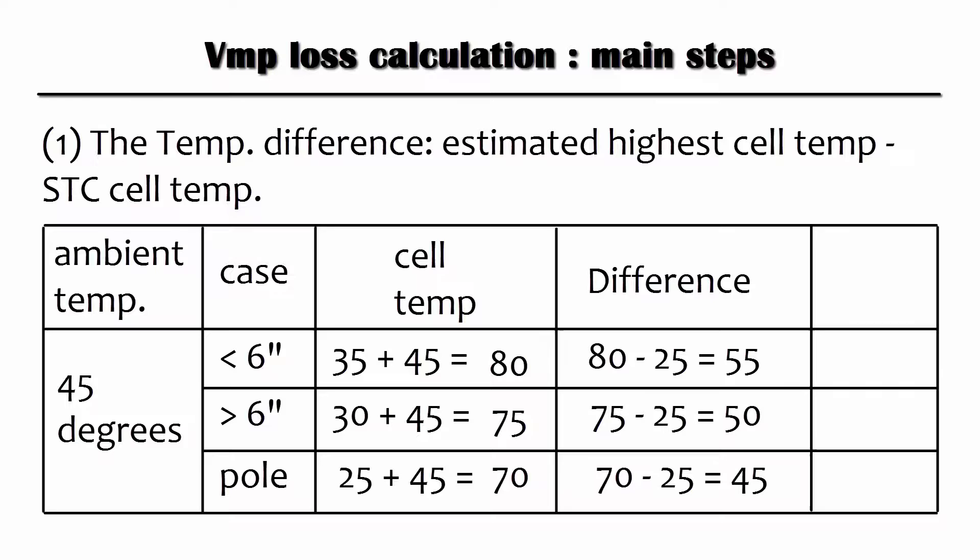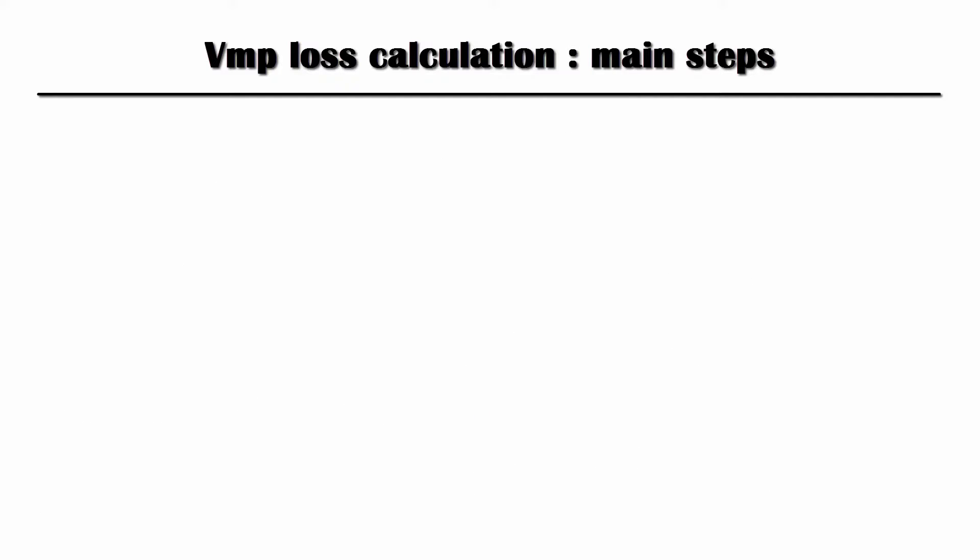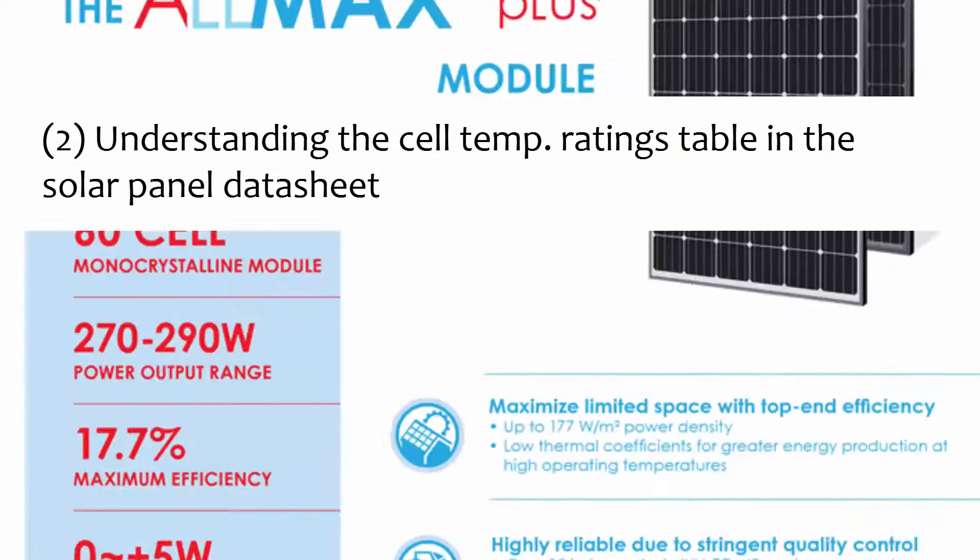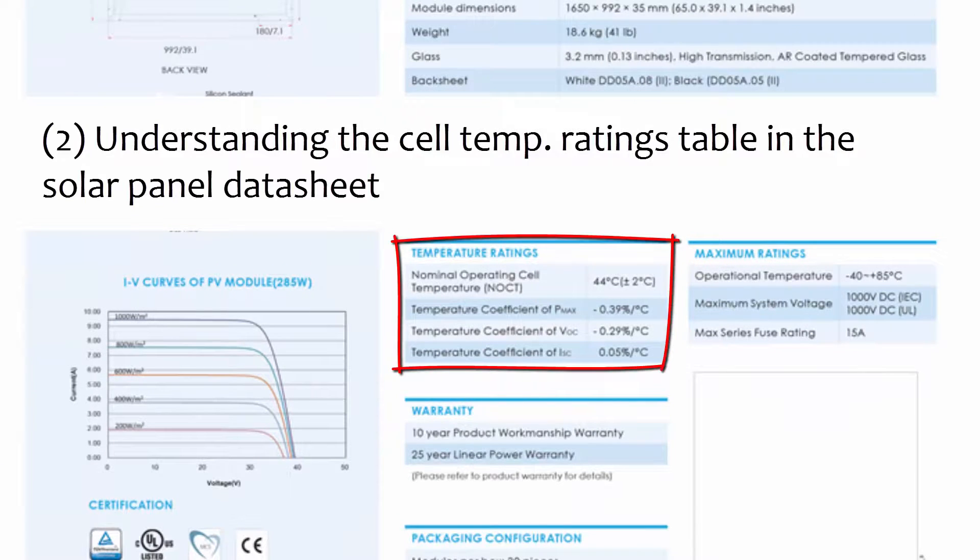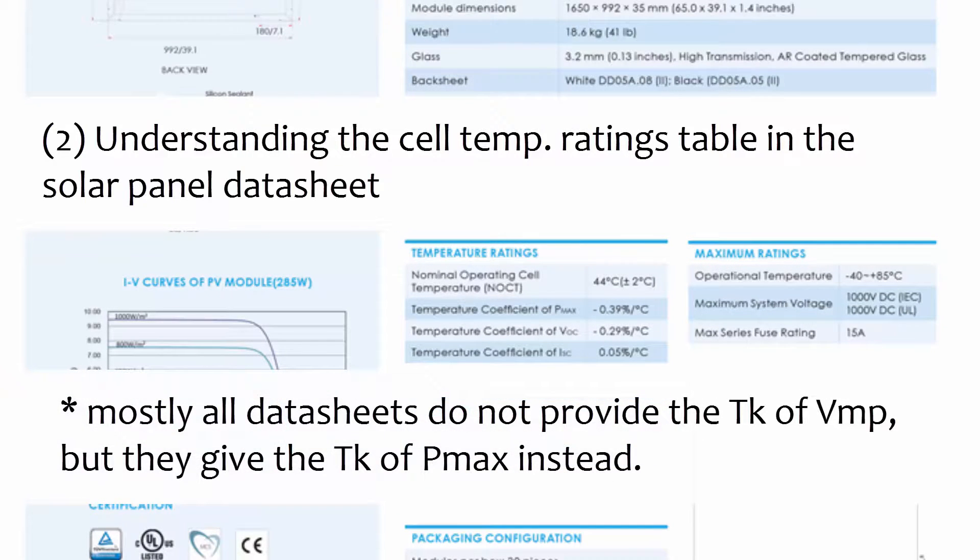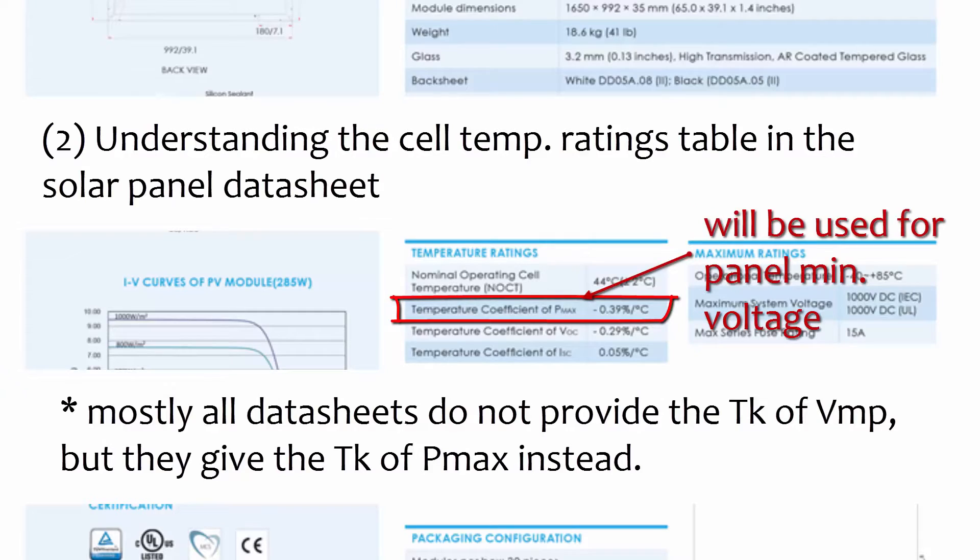The next step is understanding the temperature rating table in the solar panel datasheet. Most datasheets don't provide the temperature coefficient of the maximum power voltage, but they all give the temperature coefficient of the maximum power. That will be used for the calculation of the panel minimum voltage.